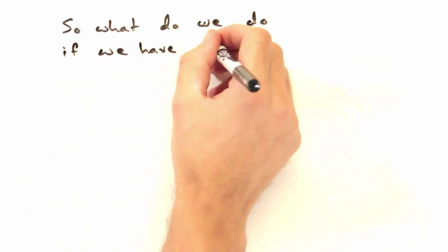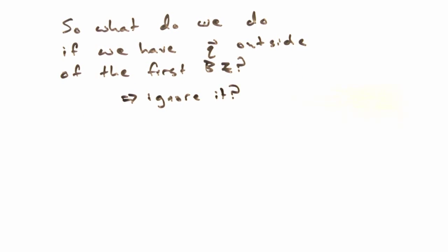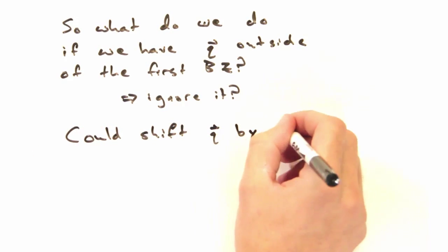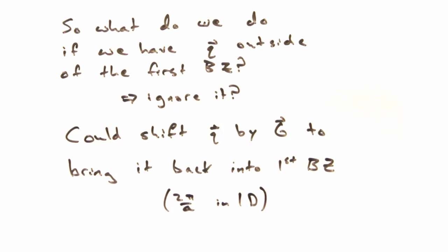But then what if we have a q vector outside this range? Do we just ignore it and only look at those inside the first Brillouin zone? Well we could, but instead we could shift q by our reciprocal vectors until it was in the right range.